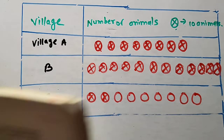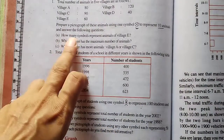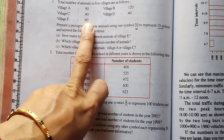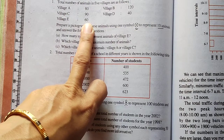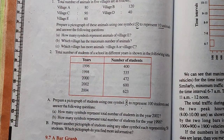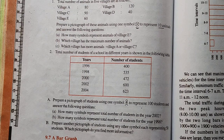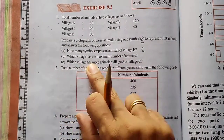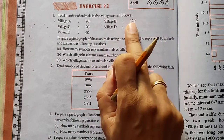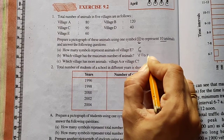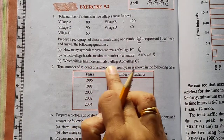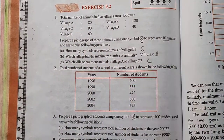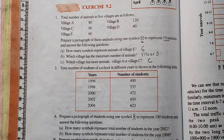Here some questions are given. How many symbols represent the animals of village E? Village E has 60 animals, so you have to draw 6 symbols. Your answer is 6. Which village has the maximum number of animals? Village B, with 120. Which village has more animals — A or C? Village A has 80 and village C has 90, so village C has more animals.